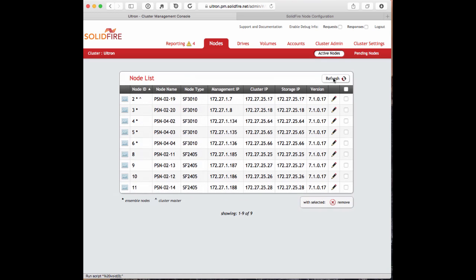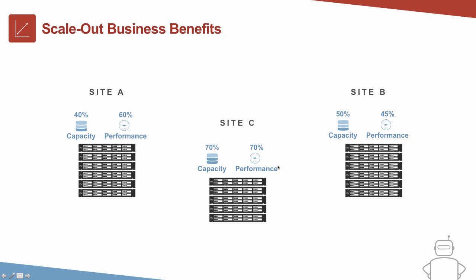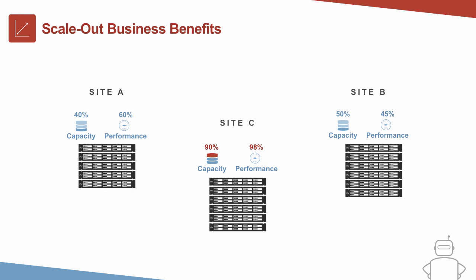Here's why, from a business benefit, the ability to remove nodes from the cluster becomes so imperative. Take an example with three data centers: A, B, and C. If data center C has an unexpected increase in both performance and capacity needs, we can take additional capacity from data center A and move it to data center C, and do the same from data center B. This not only defers a purchase for data center C, but also reduces stranded capacity.